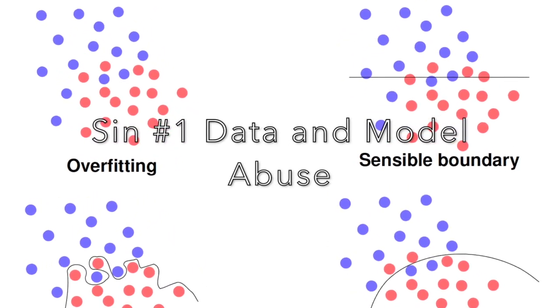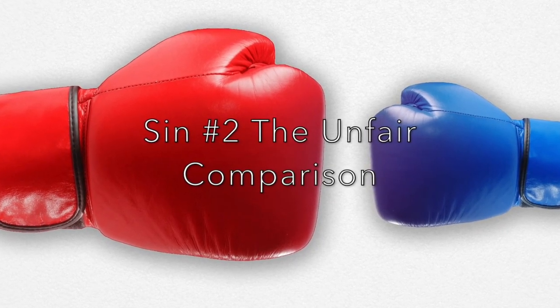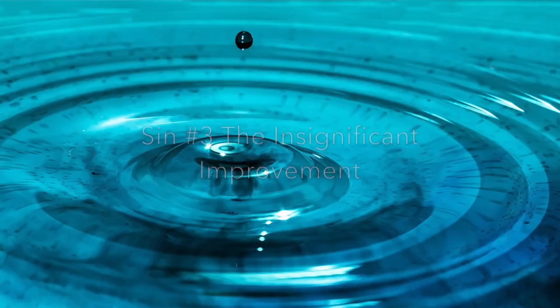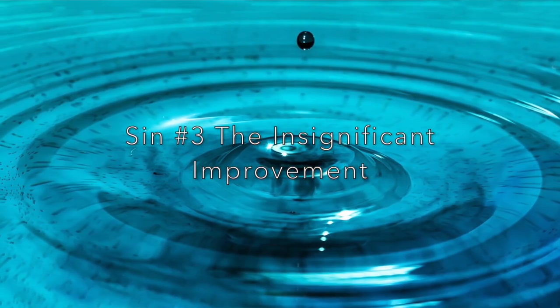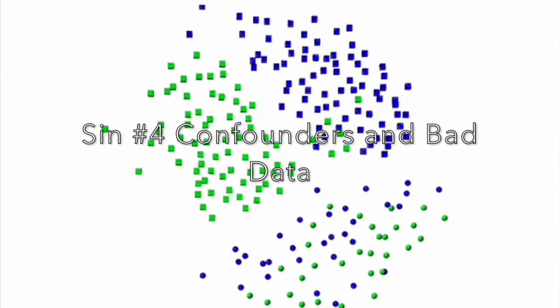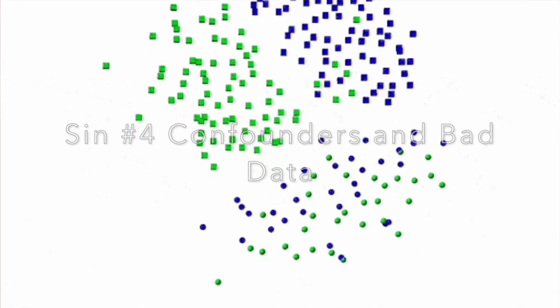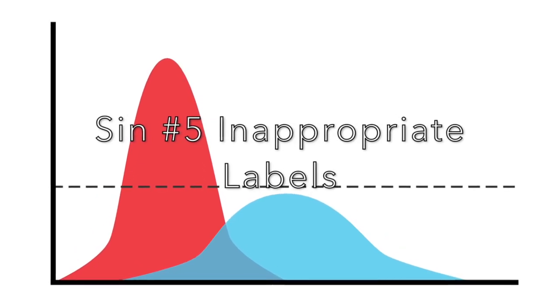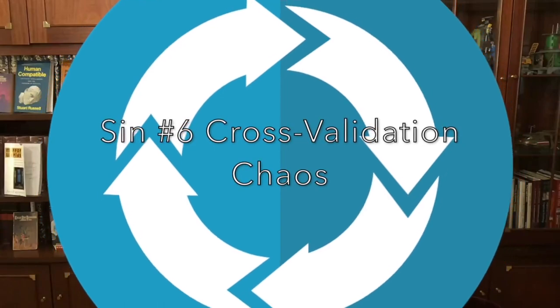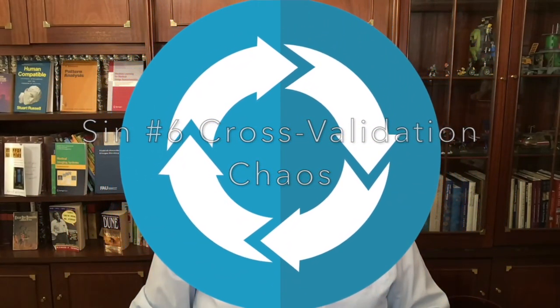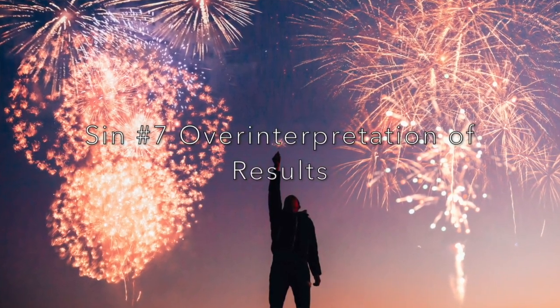Most of you already knew these pitfalls, but you may want to revisit the seven sins of machine learning every now and then, just to make sure you have not fallen for them. To summarize: Sin one, data and model abuse — split training and test, check for overfit. Sin two, the unfair comparison — also tune the baseline model. Sin three, the insignificant improvement — use significance testing. Sin four, confounders and bad data — check your data and acquisitions. Sin five, inappropriate labels — use multiple raters. Sin six, cross-validation chaos — avoid too much cross-validation. Sin seven, overinterpretation of results — stick to the evidence.